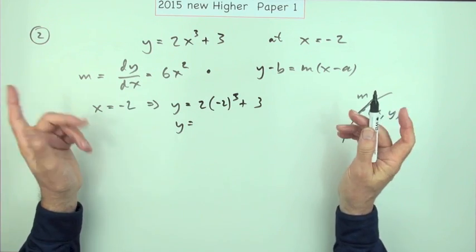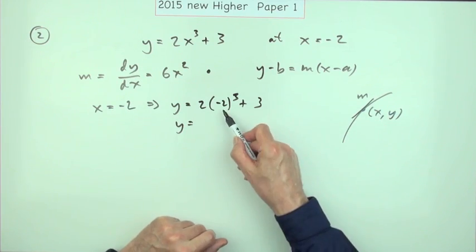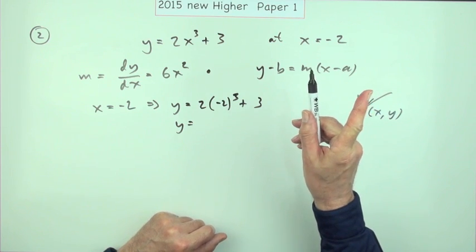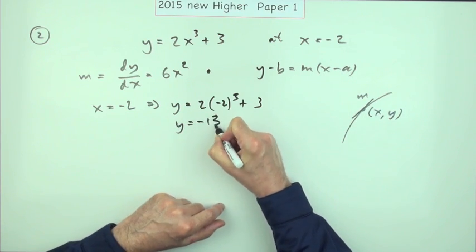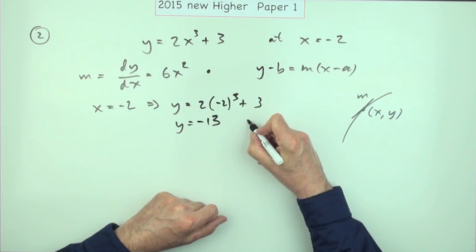It's paper one so you've got to do this in your head, but there's not a lot to it. Negative two cubed is negative eight, doubled is negative 16, but add on three is negative 13. And that's a mark.